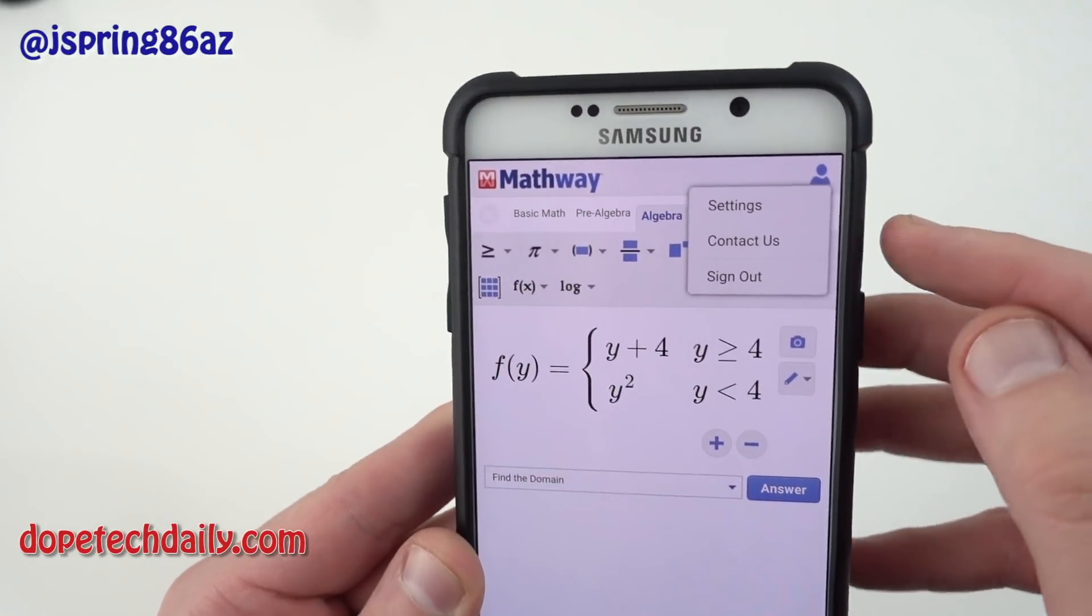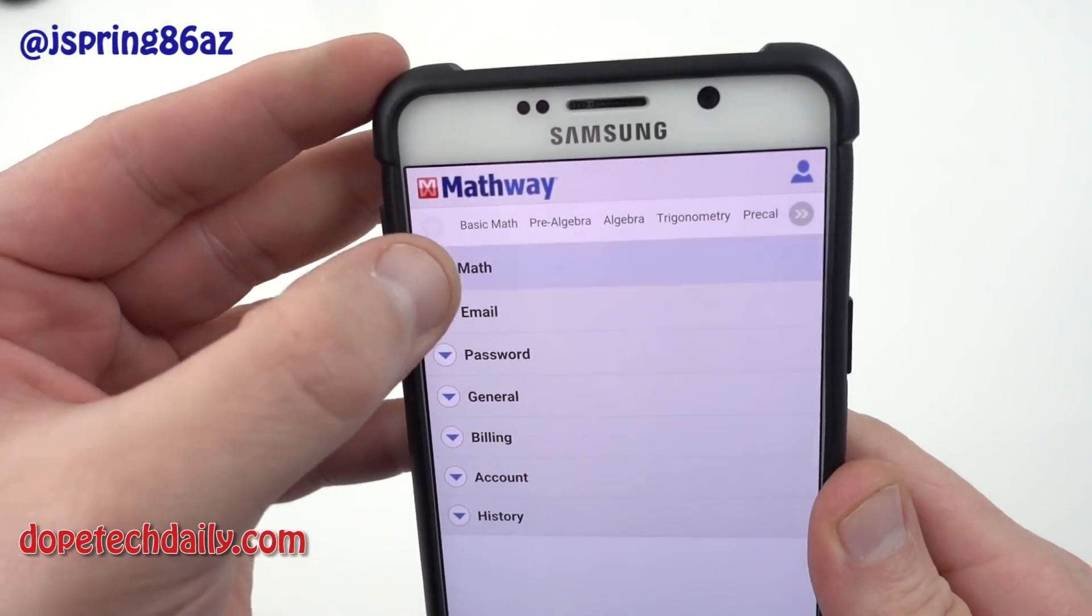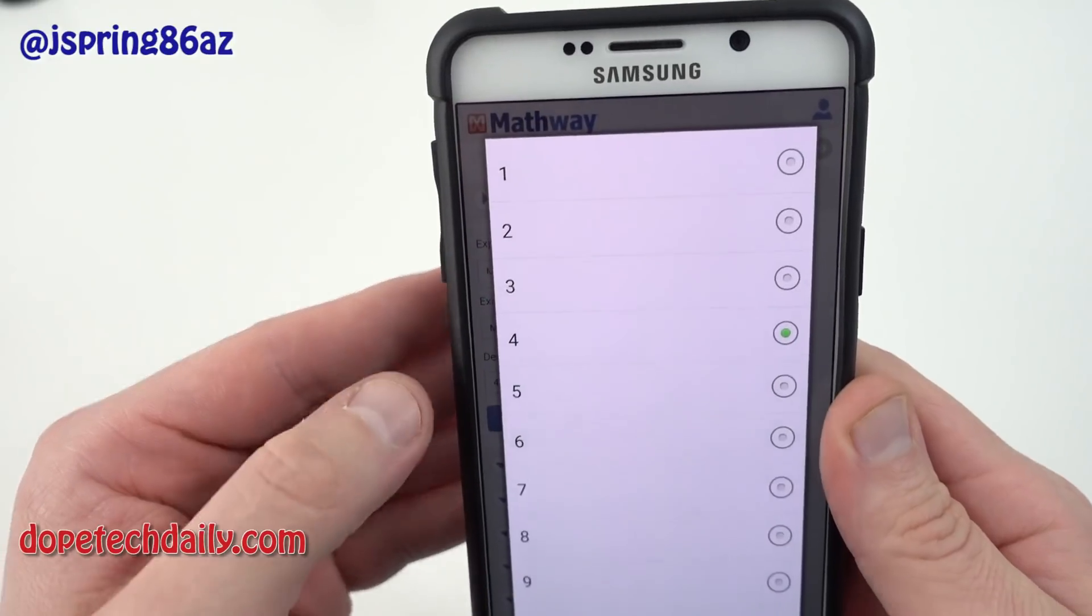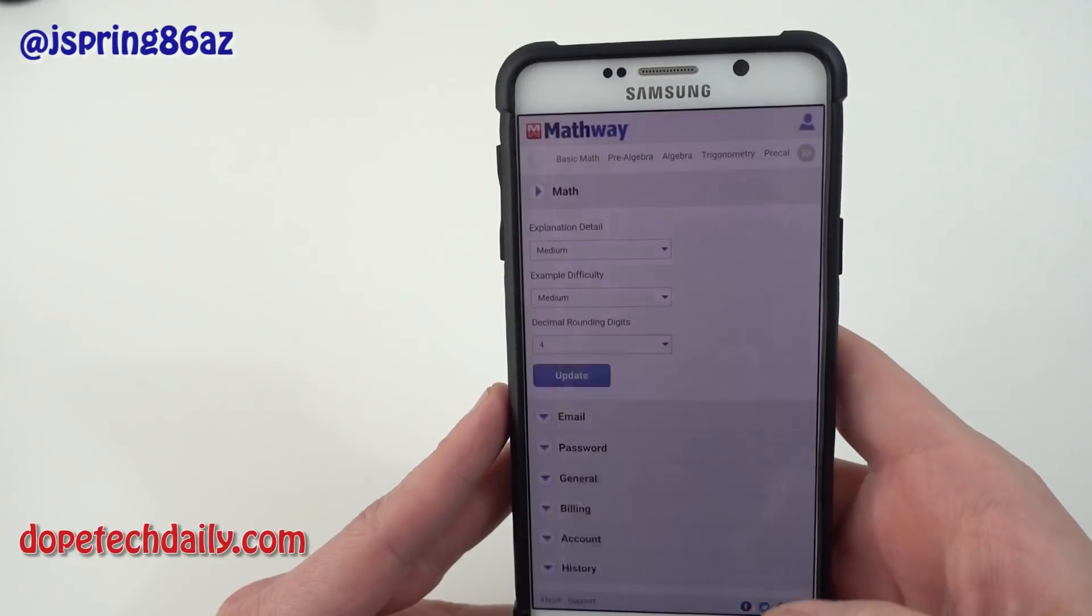One of those is your user tab so you'll want to set up a Mathway account and if you go into settings one thing you'll want to do right away is go to the math tab here and change your number of decimal digits to the correct number of decimal digits that your professor or instructor recommends for doing your homework.